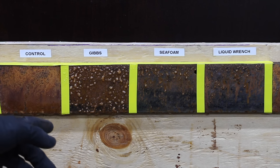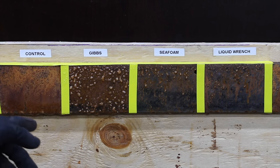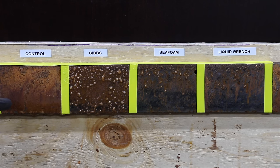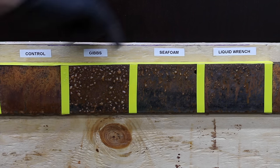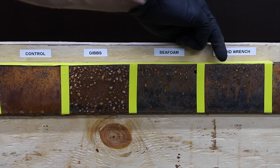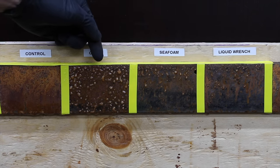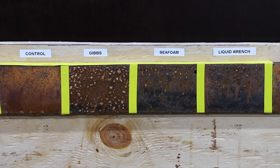After only two coats of the hydrogen peroxide vinegar and salt mix, there is a lot of corrosion on this steel. Look at our control. Coming in first place is Seafoam. Next up is liquid wrench. Third place is Gibbs. We'll give it a few more hours and come back to this again later in the video.